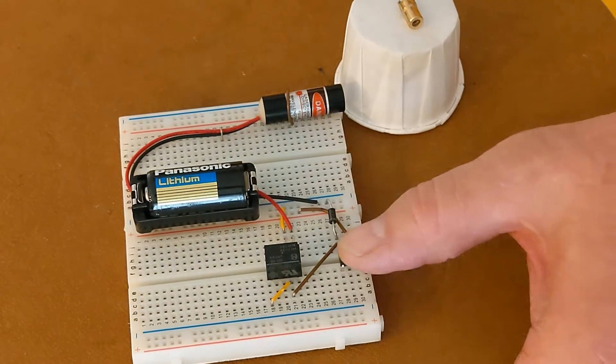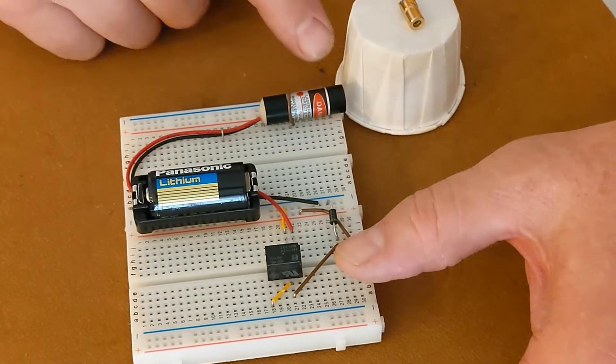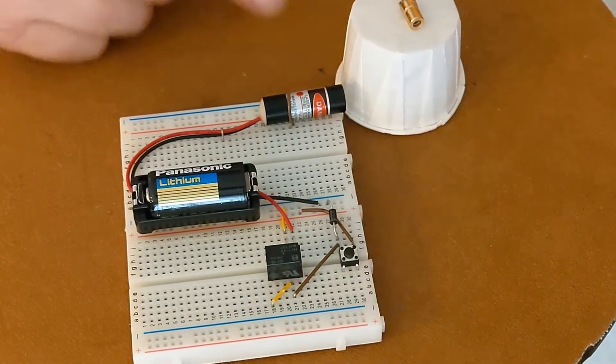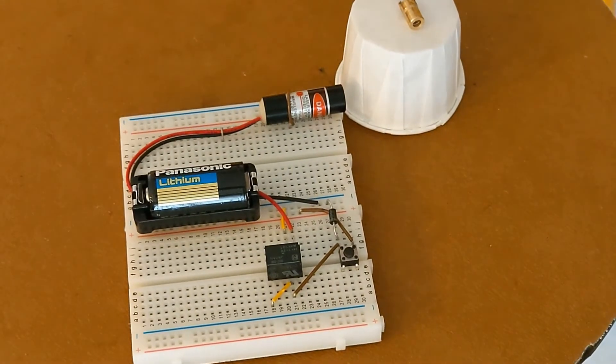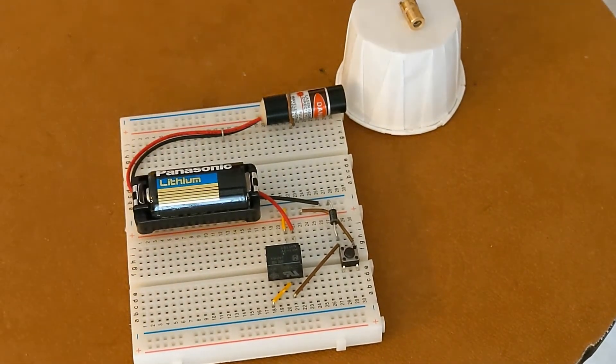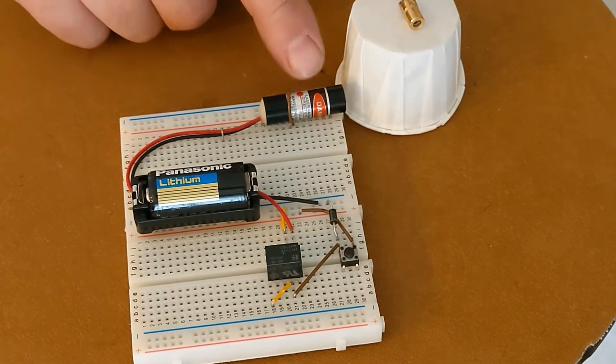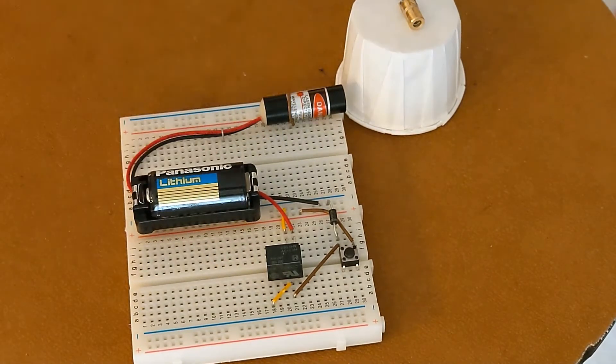So you can see basically the laser light burst is the length of time it takes for this relay to move off of the normally closed contact, because the laser module is being powered through the normally closed contact.